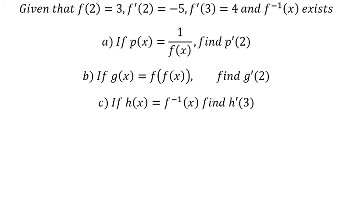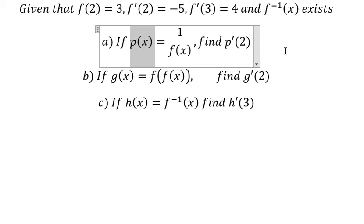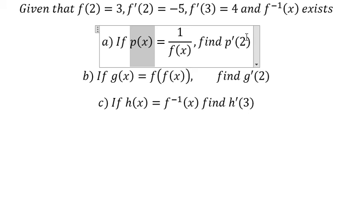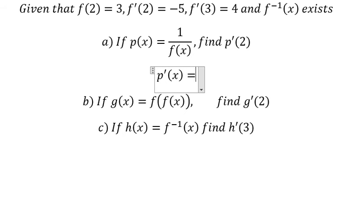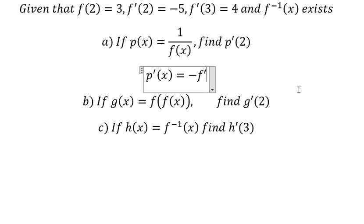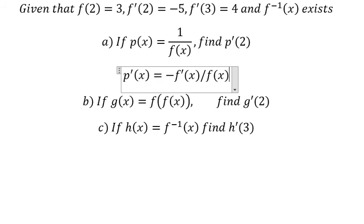Hello everybody. Today I will talk about calculus. The topic is about application of derivatives. Now I will show you how to answer question one. We have b(s) equal to 1 over f(s). They want to find the first derivative of the function b(s) at s equals 2. So this is about the quotient rule. The first derivative of b(s) you will get negative first derivative of f(s) over f(s) to the power of two.